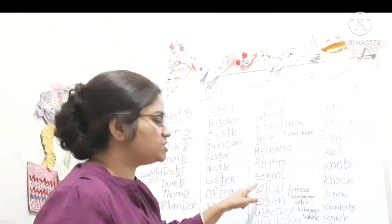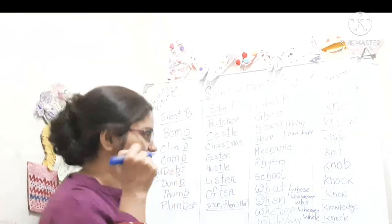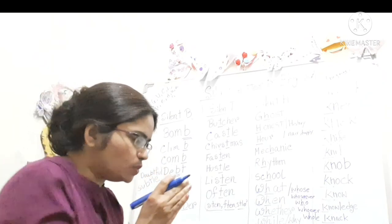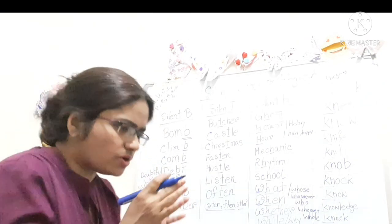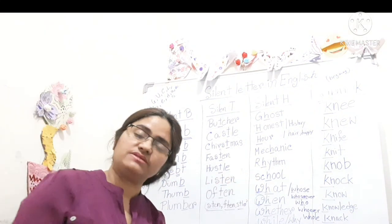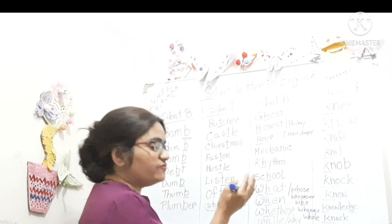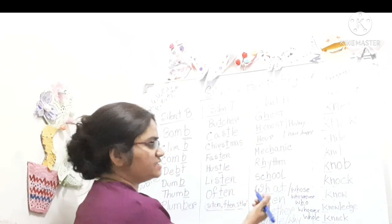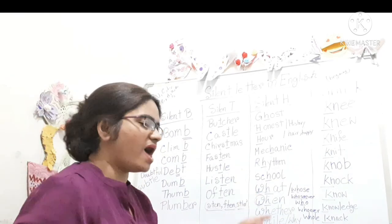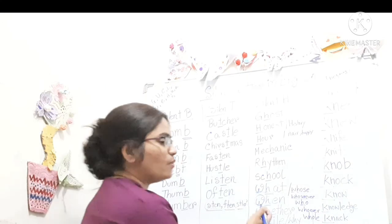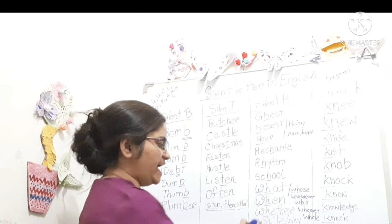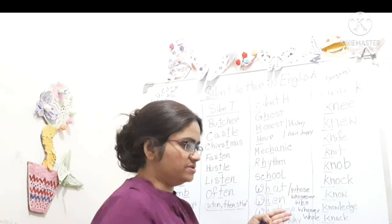Mechanic, rhythm, school. Now this is the second one. W-H-A-T, what you know. When W is sitting in front of the H, in that case silent H rule is applicable, but here also exceptions are there. See, first let me give you examples. Silent H, W-H-A-T, what. What is your name? We are telling, when H is silent. Whether, while, while H is silent.